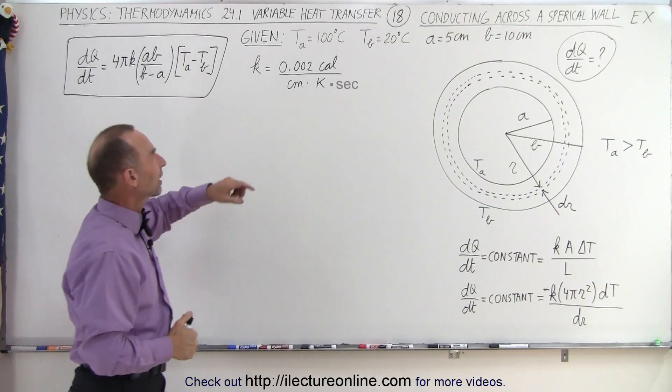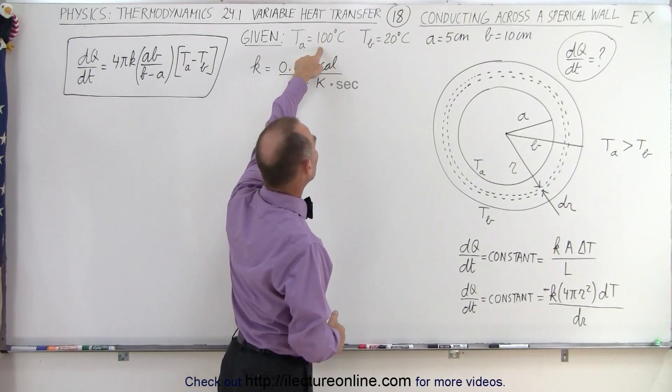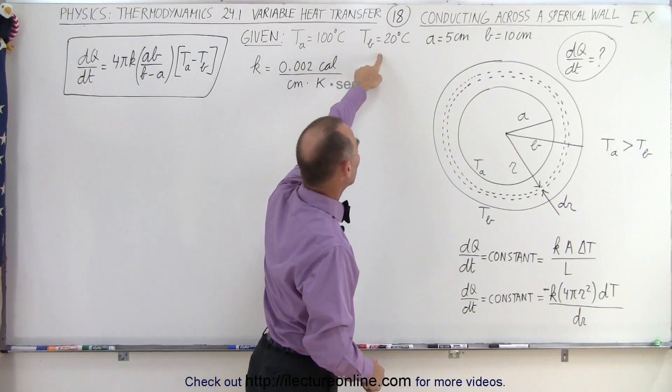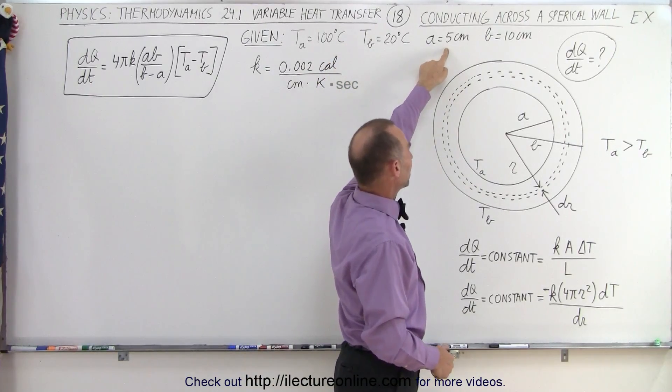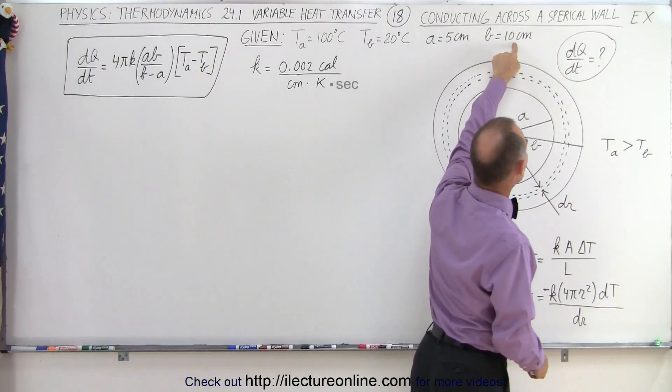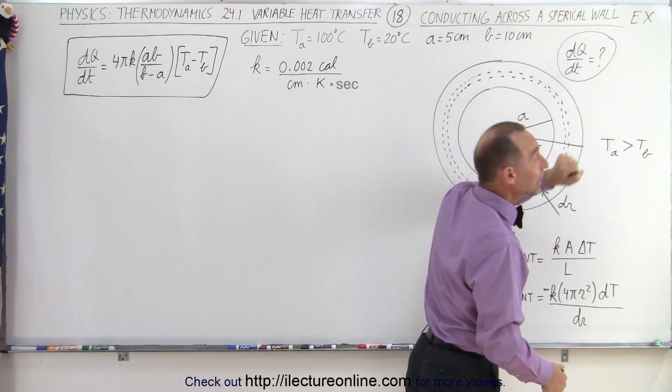Now let's say that we're given that the inside temperature is 100 degrees centigrade, the outside temperature is 20 degrees centigrade, the inside radius is 5 centimeters, the outside radius is 10 centimeters, and we're trying to find dQ/dt.